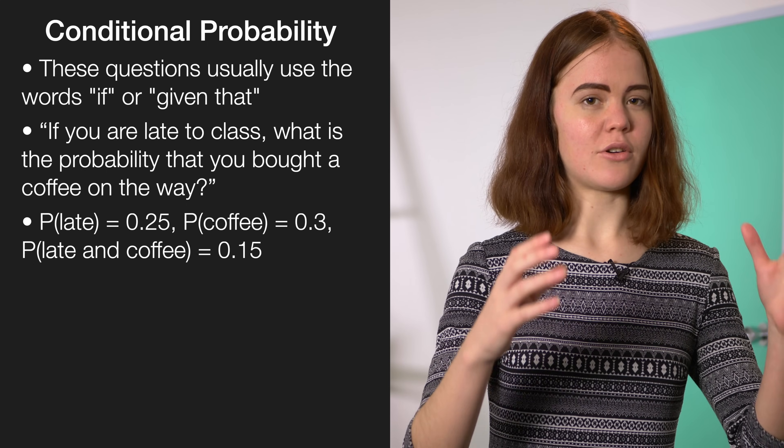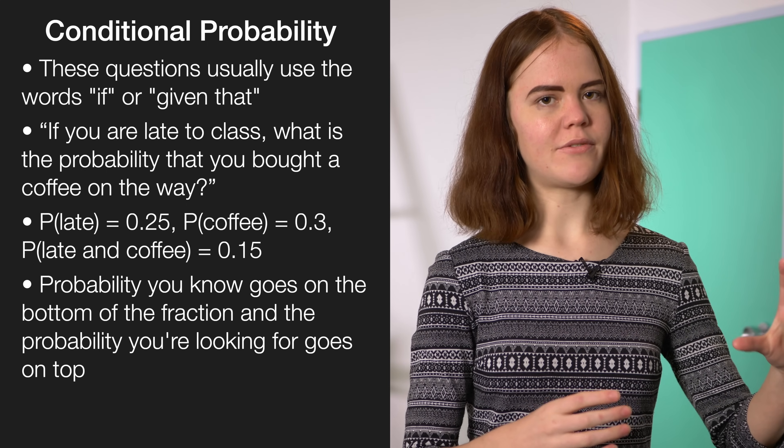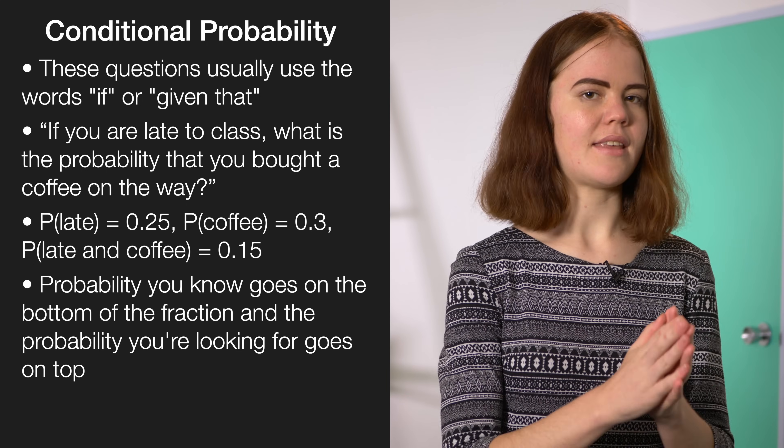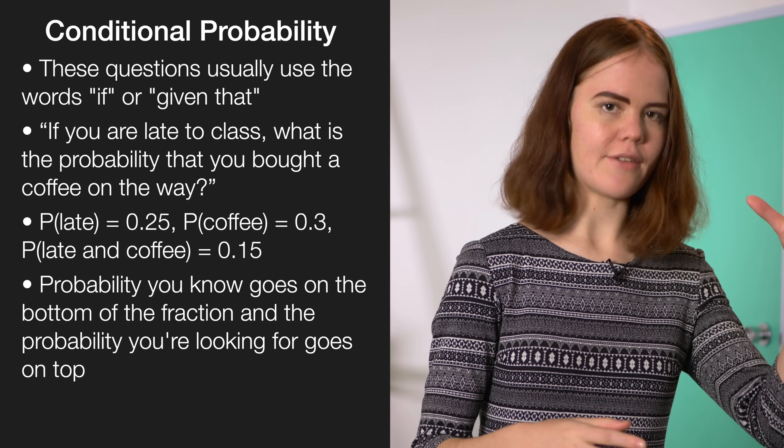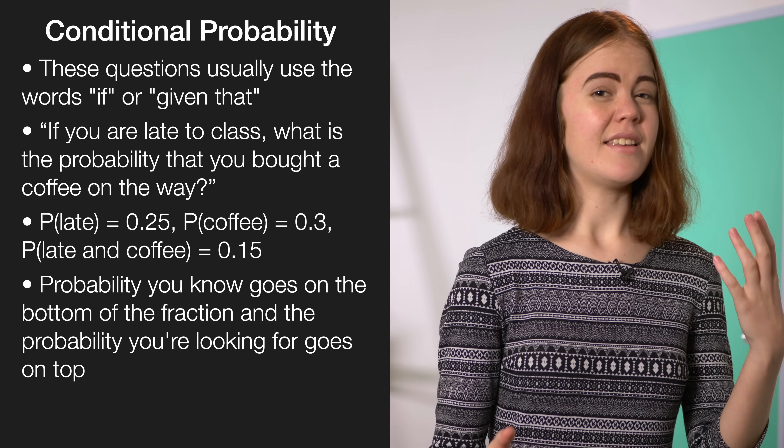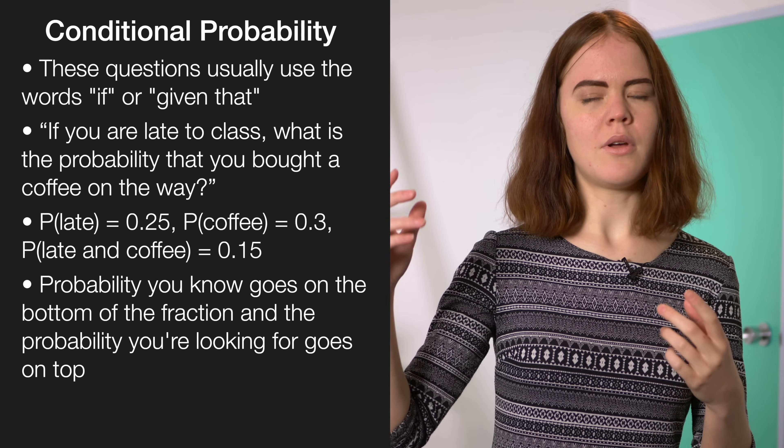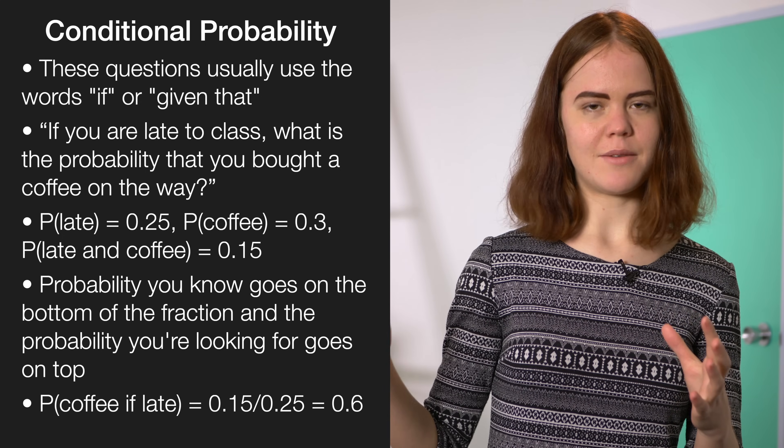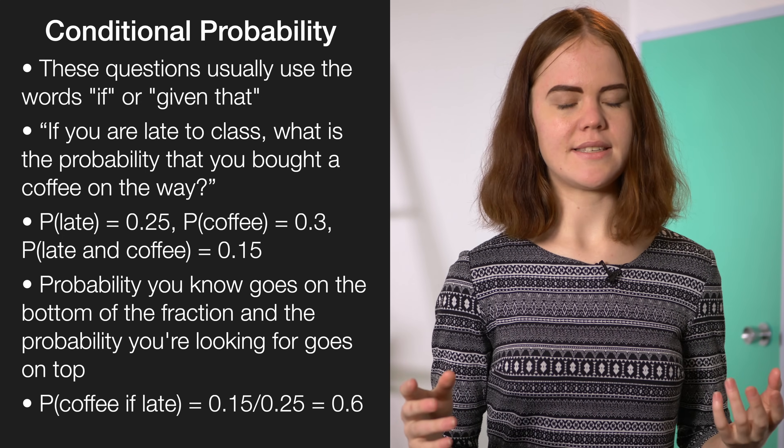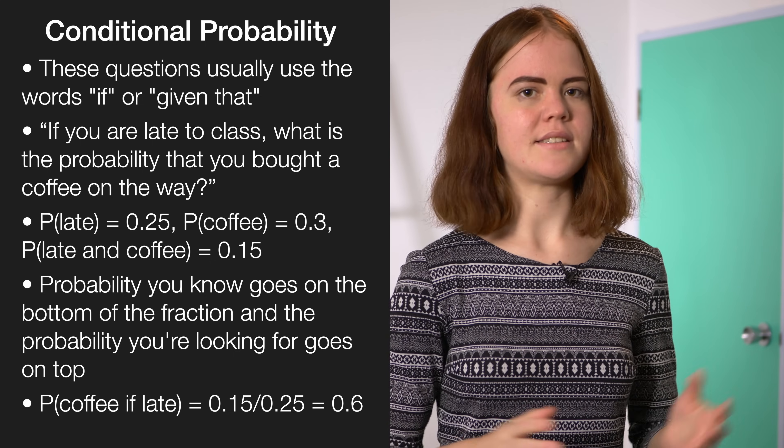The trick to these is that the thing that you're given, the thing you know, goes on the bottom of the fraction, so that would be the probability that I'm late, and the thing you're looking for goes on the top. So, that would be the times when I'm late and I bought a coffee. So, we'd end up doing 0.15 divided by 0.25 and you get 0.6. So, your conditional probability is 0.6.